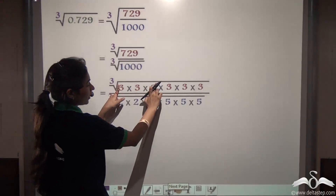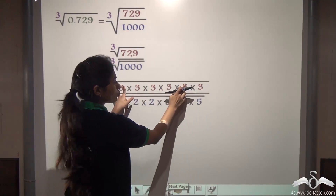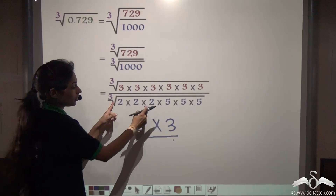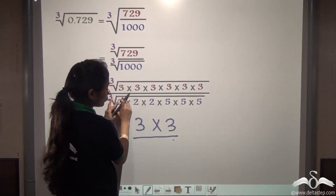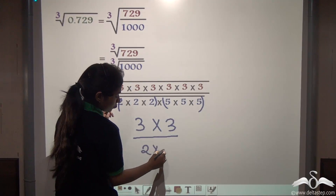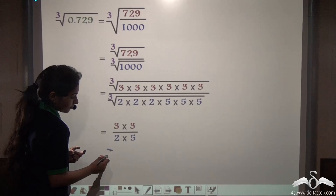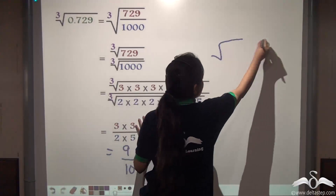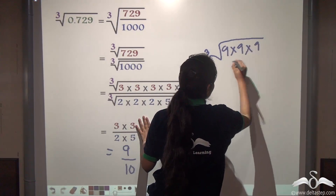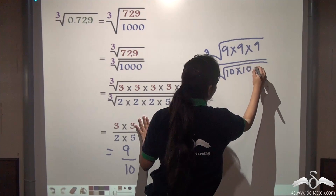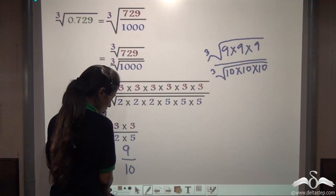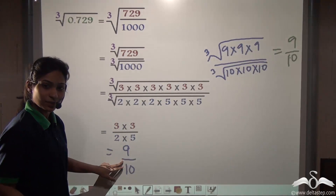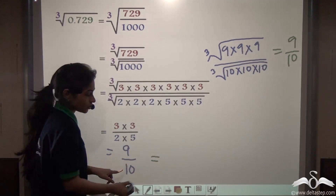We have 3 appearing three times in one group and three times in another, so taking one number out from each group gives 9 in the numerator. For 1000 we have 2 three times and 5 three times, so taking one from each group gives 2 into 5 equals 10 in the denominator. So the cube root is 9 by 10, which is 0.9.